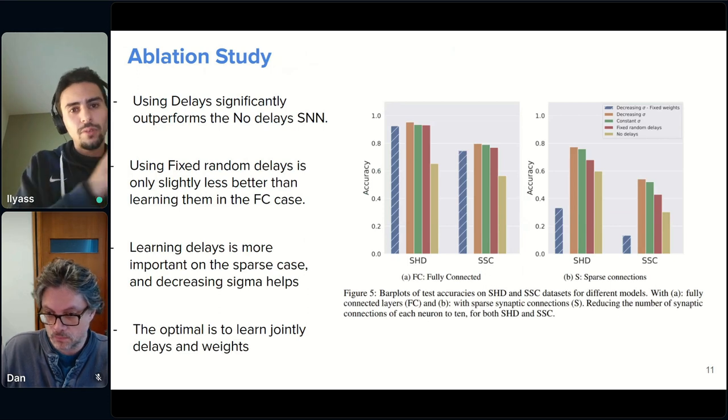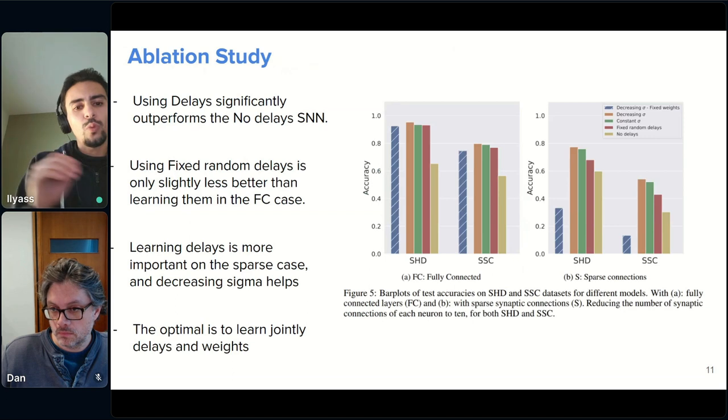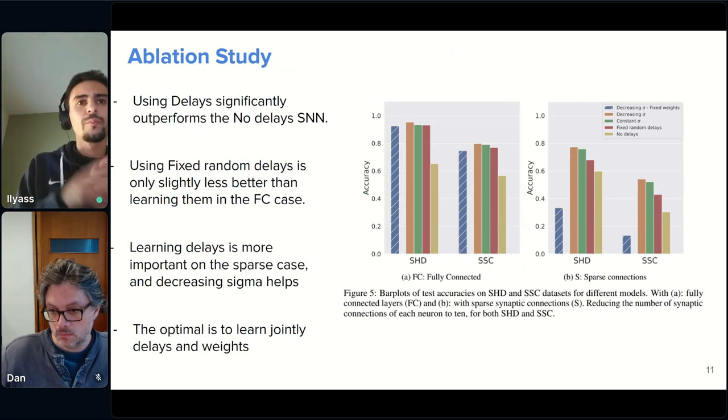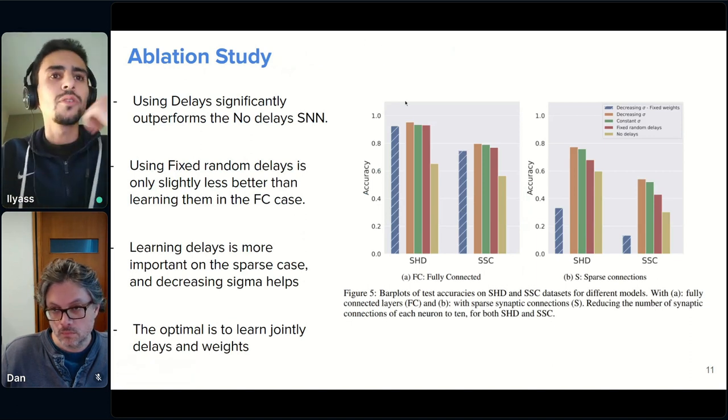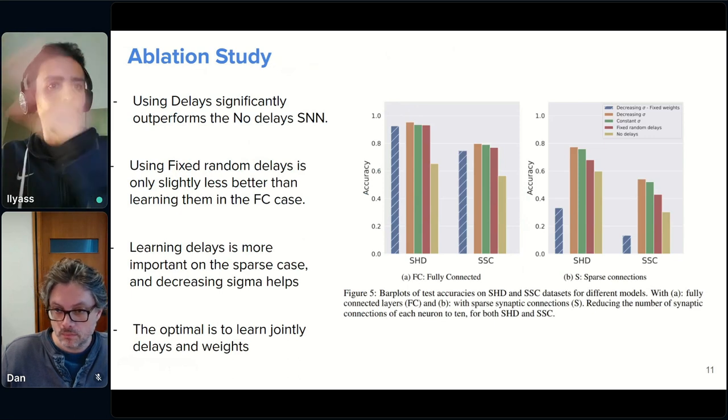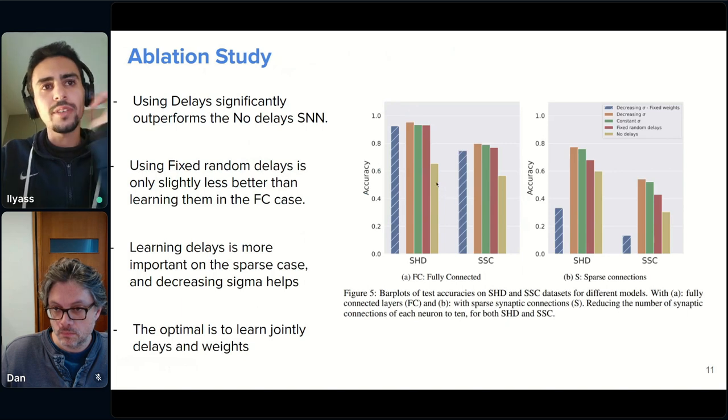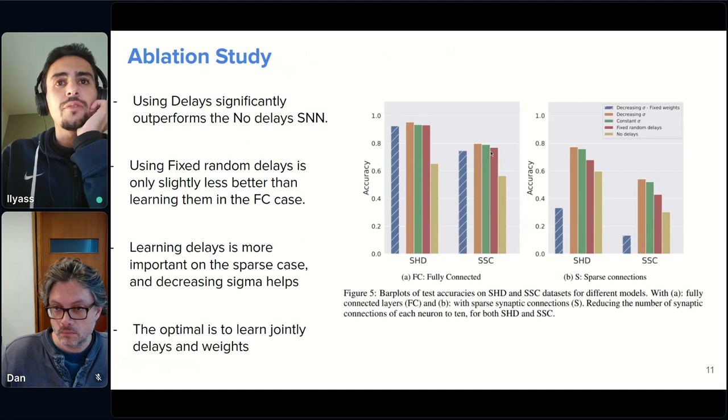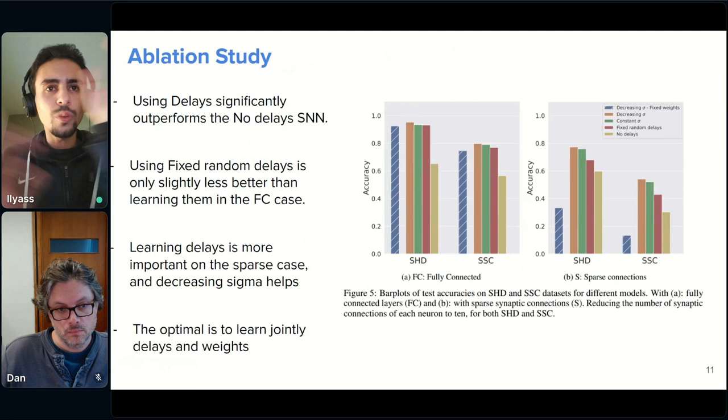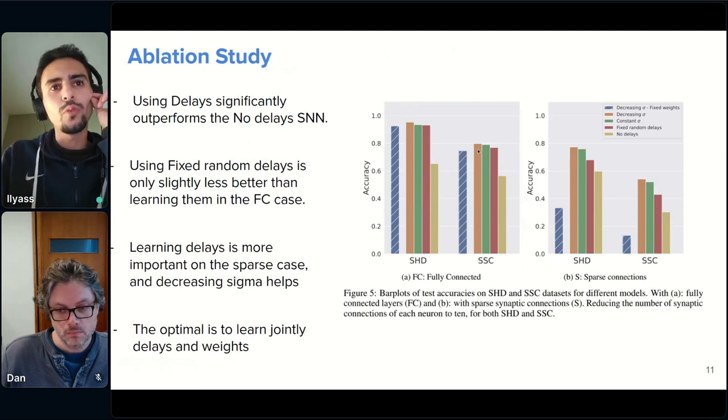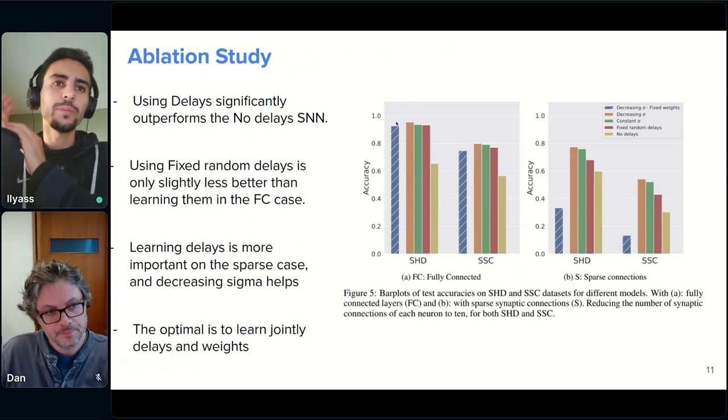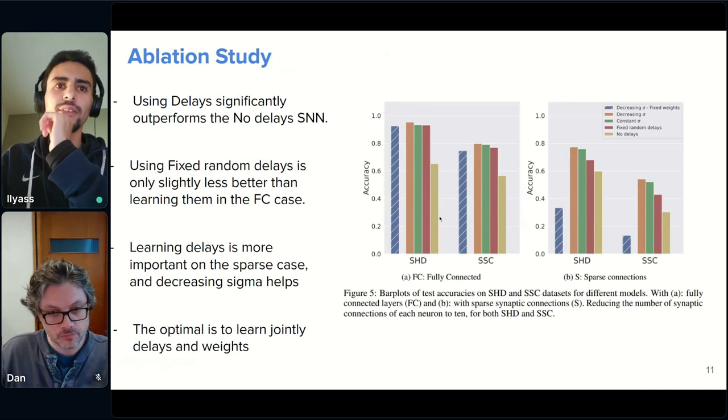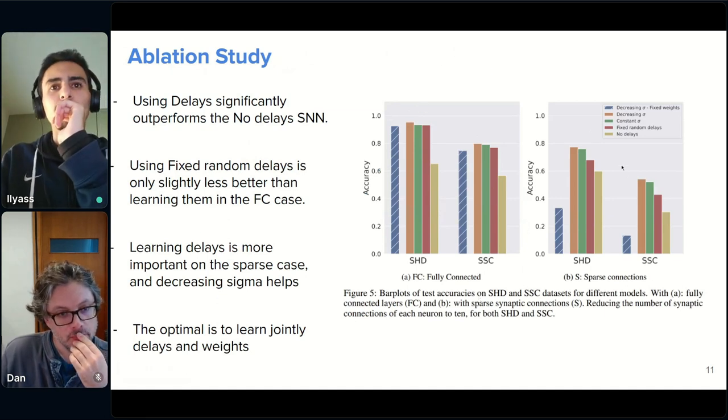So for this, we did some tests where we took one model initialization and each time we trained a different set of parameters. So for example, we will train both delays and the synaptic weights or train only delays or train only the weights. And this way we can compare and see if the method is working or not. So, one of the important conclusions that we got from this is that, first of all, integrating delays, whether they are learned or not, always helps compared to a standard SNN, which is in yellow here. The second thing that is very interesting is that using fixed random delays in red here, without actually learning them leads to a pretty good performance. The difference between the full method is like only 4% in the fully connected case.